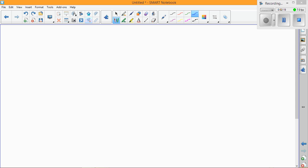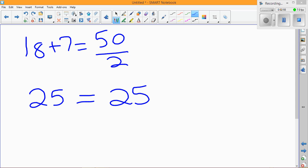Let's try this. This is a pretty easy one: 18 plus 7 equals 50 over 2. So 50 over 2 is 25, and 18 plus 7 is also 25.